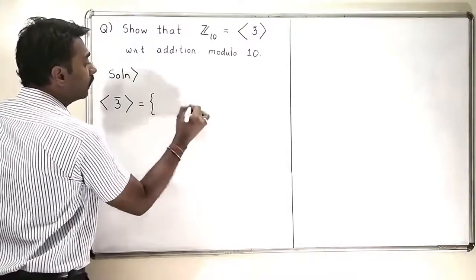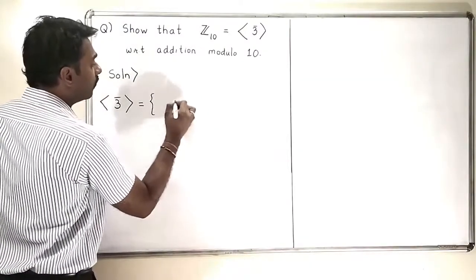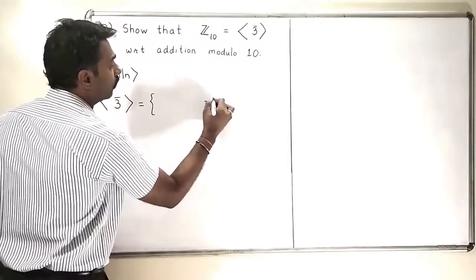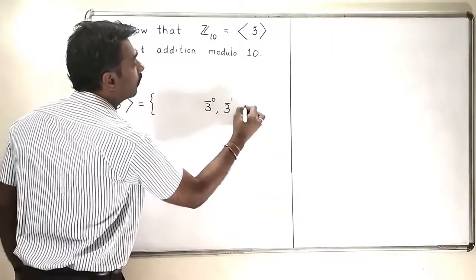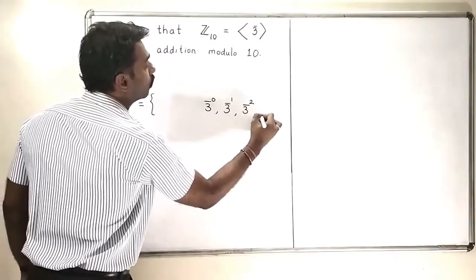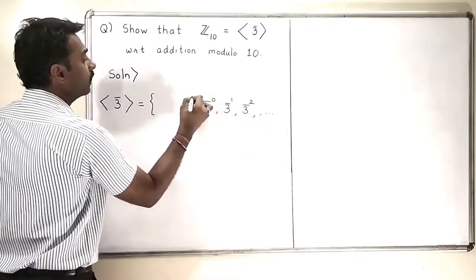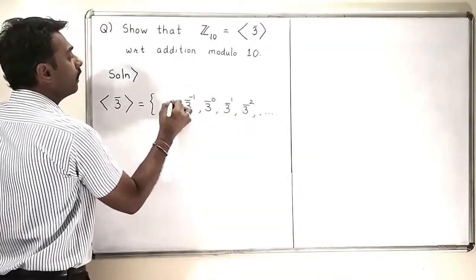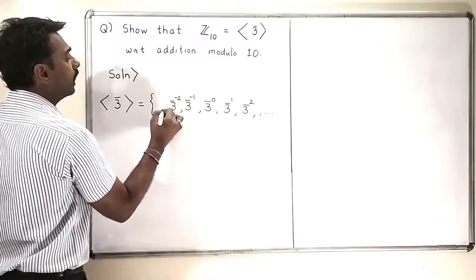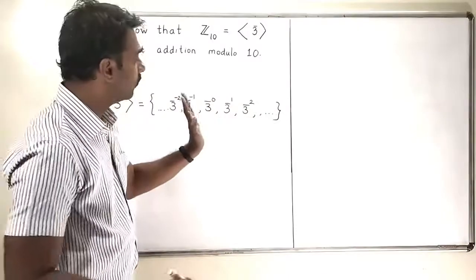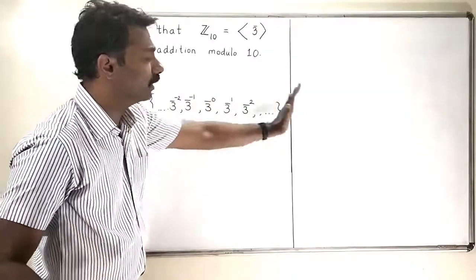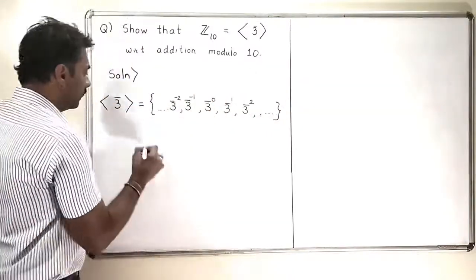So I will consider all the powers of 3 bar. So 3 bar raised to 0 bar, 3 bar raised to 1 bar, 3 bar raised to 2 and so on. Also we calculate the negative powers of 3 bar. For the time being, I will just look at the positive powers and then I will get that these powers itself form the set Z₁₀.